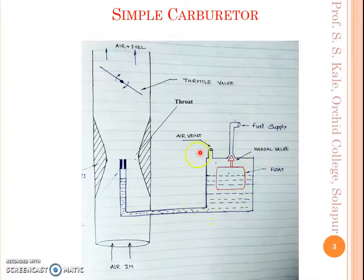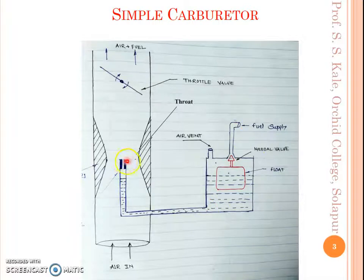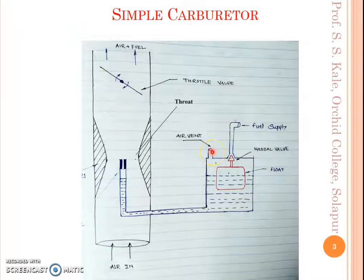Connected to the carburetor tube is another part called the float chamber. This float chamber has a supply from the fuel tank, so the fuel tank is connected here and fuel will be coming from it. Another pipeline from the float chamber opens at the throat of the venturi. One small hole is also provided called the air vent, to maintain pressure inside the chamber equal to atmospheric pressure.